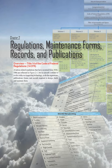Chapter 2: Regulations, Maintenance Forms, Records, and Publications Overview. Title 14 of the Code of Federal Regulations, 14 CFR. Aviation-related regulations that have occurred from 1926–1966 are reflected in Figure 2-1.